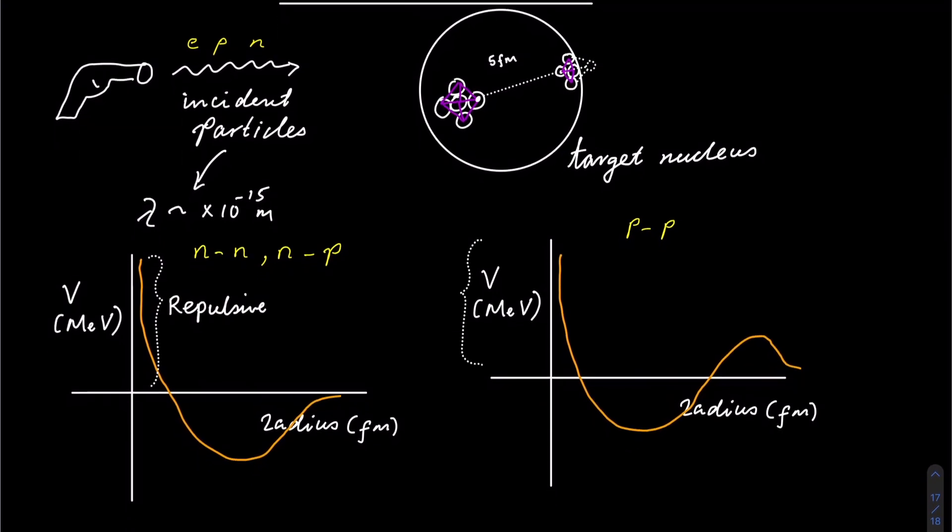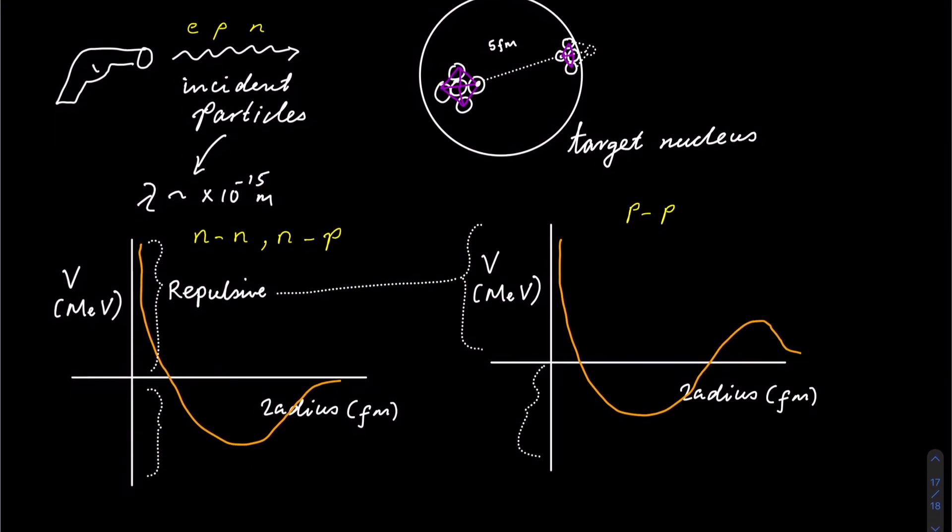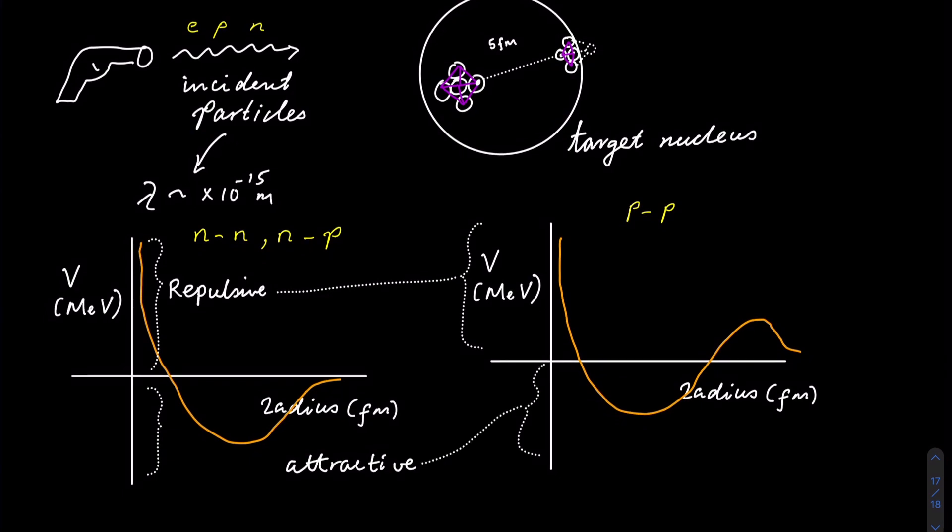The neutrons cannot come too close to each other, since there is a repulsive force at very close distances, and an attractive force in the region of the strong nuclear force.